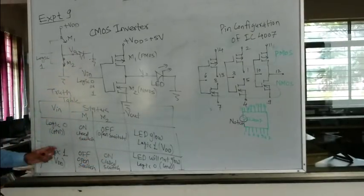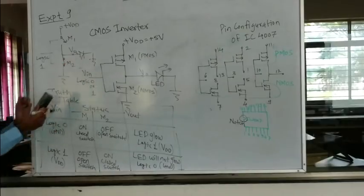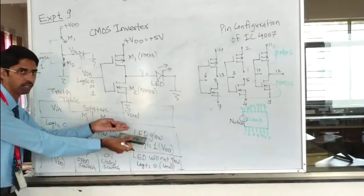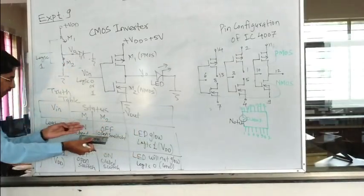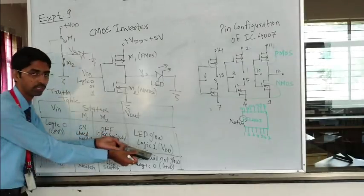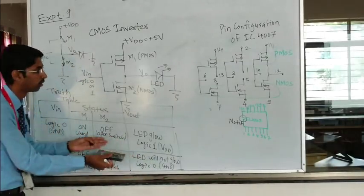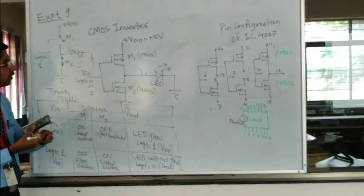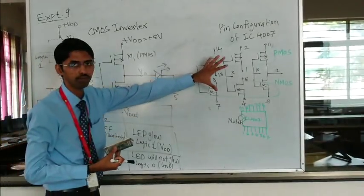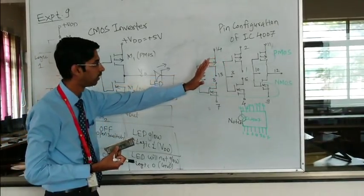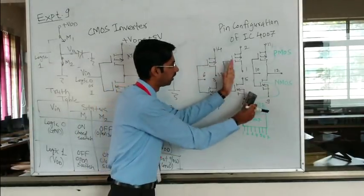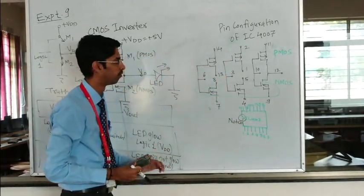So this is the truth table of the CMOS inverter: when you give logic 0 input you get logic 1 output, and when you give logic 1 input you get logic 0 output. Now we will use the IC. There are three pairs — either pair one, second pair, or third pair — you can use any one pair.